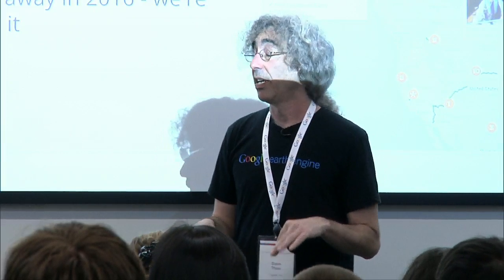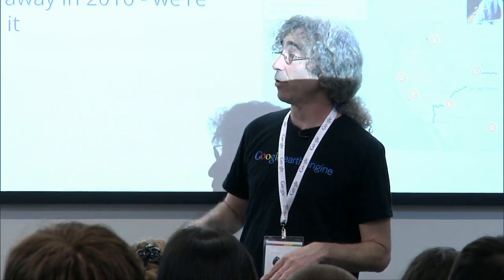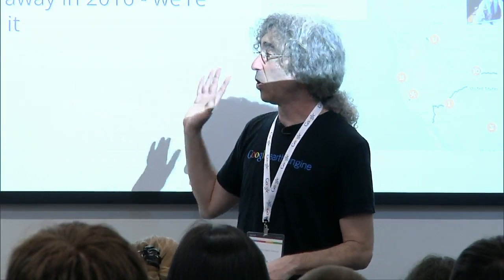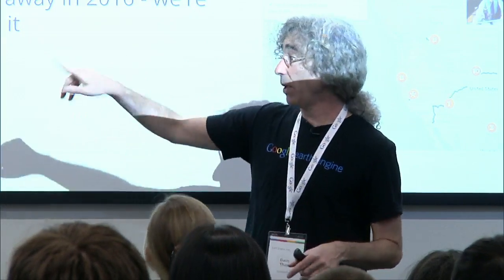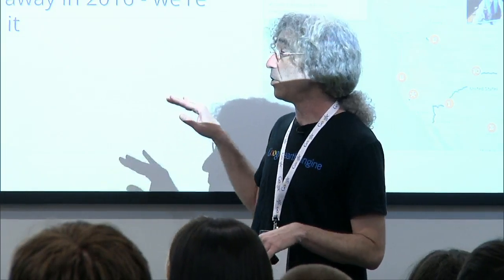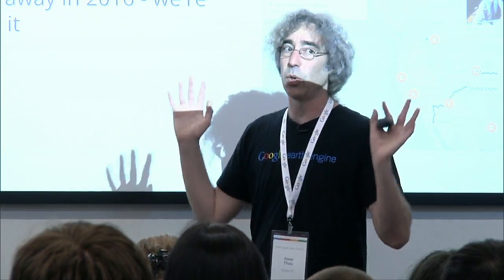If you want to upload your own vector data, Fusion Tables is the way to do it. If you want to upload your own raster data, right now the way to do it is Google Maps Engine — a platform for hosting geodata. It's actually going away in 2016, so we are currently replacing it. But for now, if you want your own imagery that's private to you, you can upload it into Maps Engine and analyze it there. I'm going to be doing a session on that called using Earth Engine with other tools.